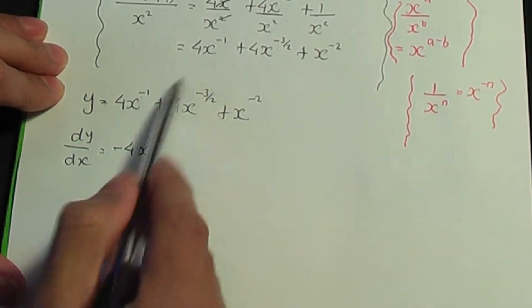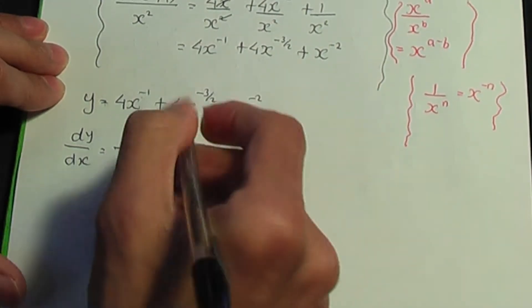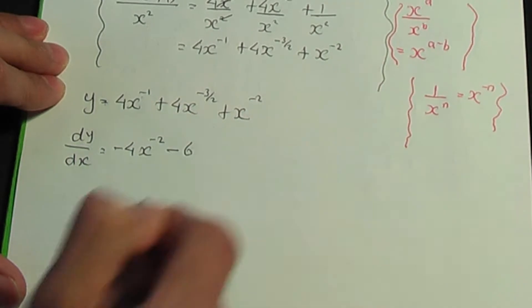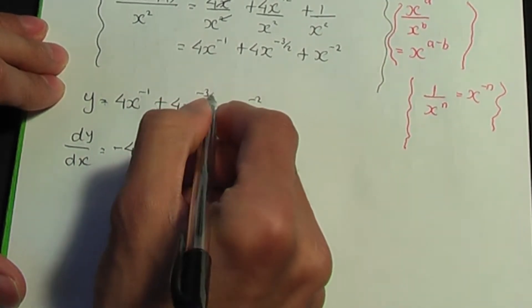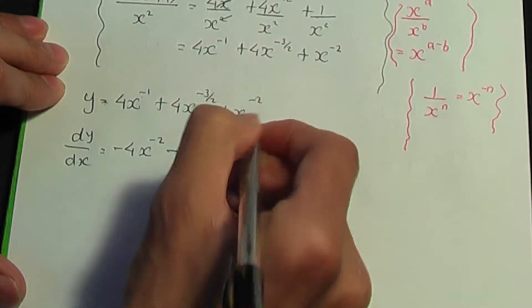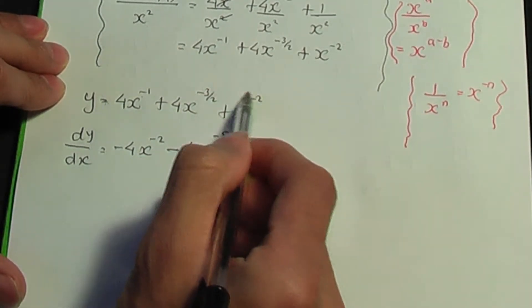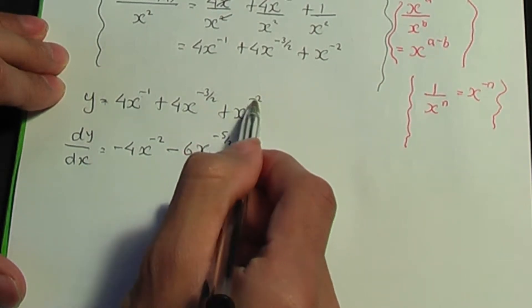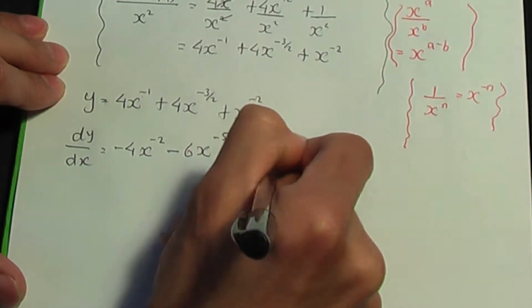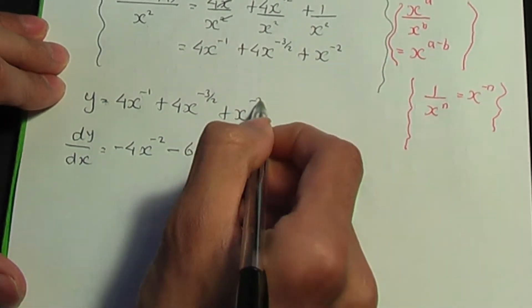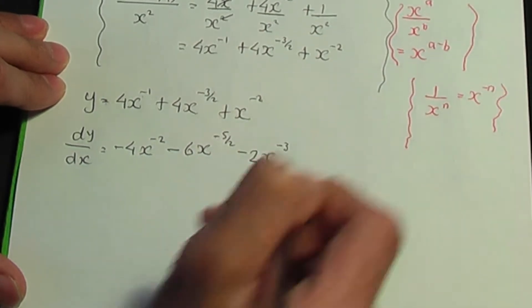For the second term, multiply by the power: minus 3 over 2 times 4 is minus 6. Subtract 1 from the power: minus 3 over 2 minus 1 is minus 5 over 2. And for the last term, multiply by the power: minus 2 times 1 is minus 2. Subtract 1 from the power: minus 2 minus 1 is minus 3.